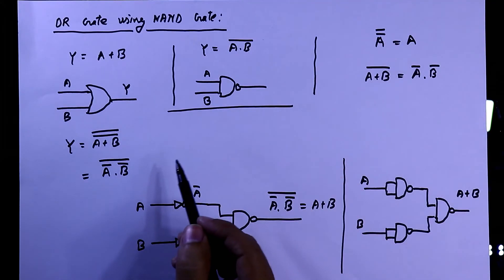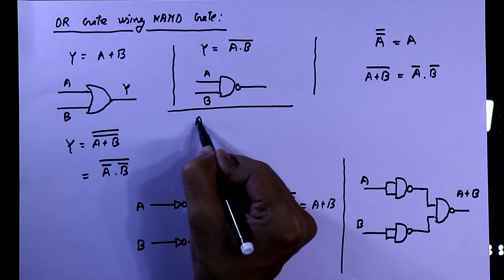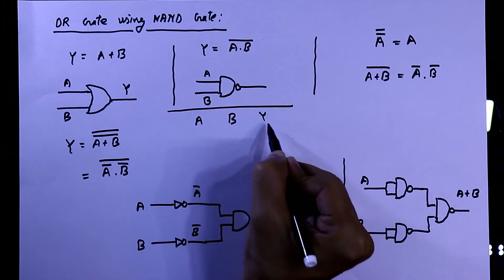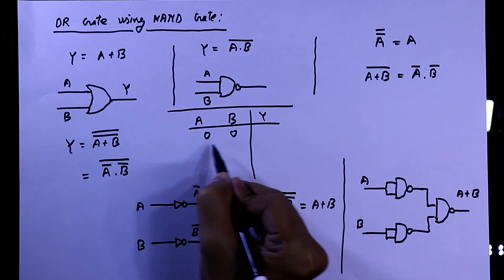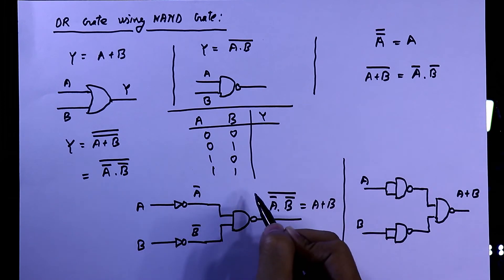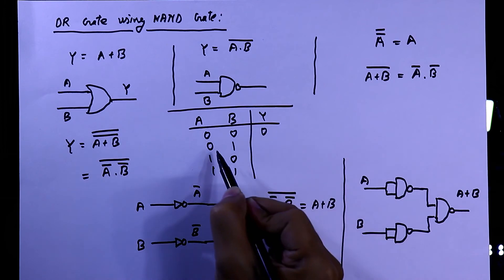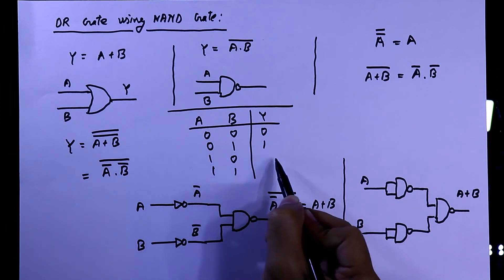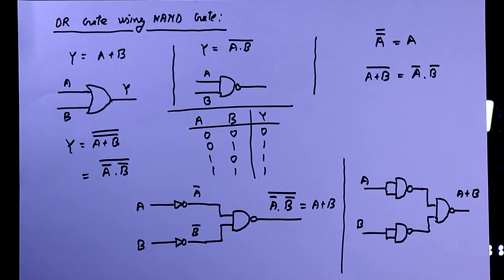The mathematical expression is A + B, so here are inputs A, B and Y is the output. There are 4 possibilities: 00, 01, 10, and 11. The output follows A + B: 0+0=0, 0+1=1, 1+0=1, 1+1=1. Now we will verify this truth table on the breadboard.